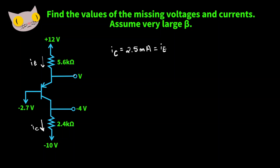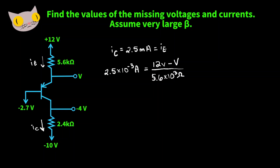Now we can find this missing voltage. We take the emitter current and set it equal to 12 volts minus V, divided by 5.6 times 10 to the third ohms. Multiplying both sides by 5.6k ohms gives us 14 on the left and 12 minus V on the right, which gives us negative 2 volts for our missing voltage.